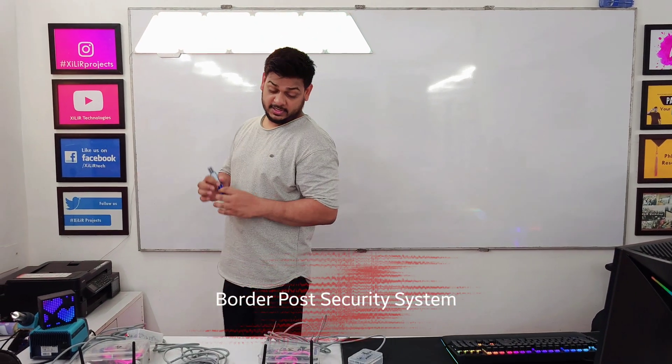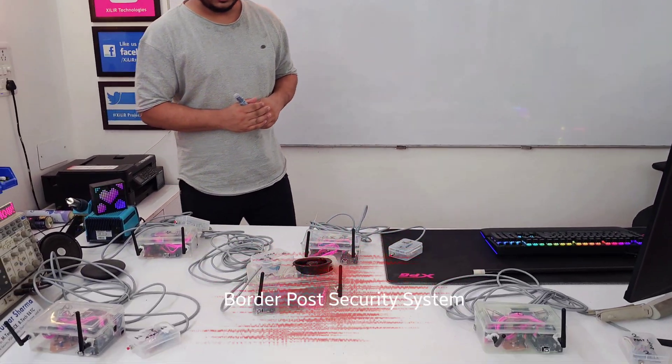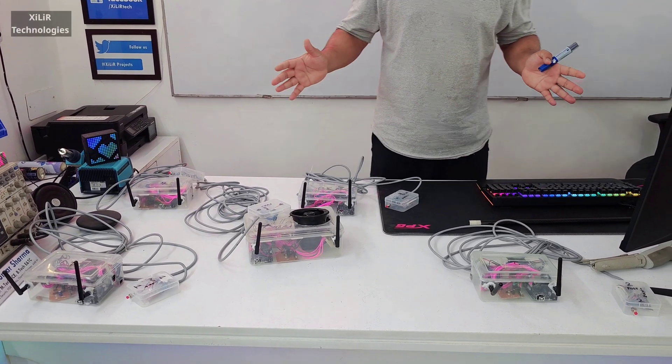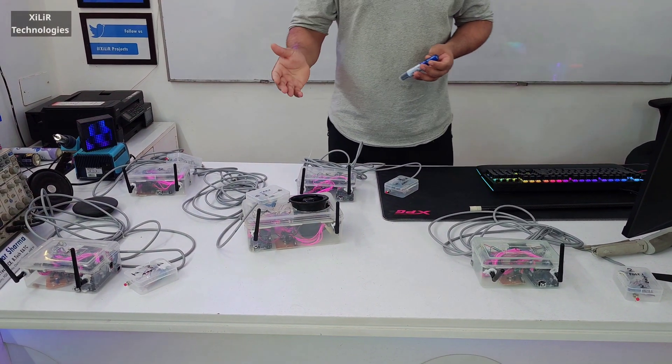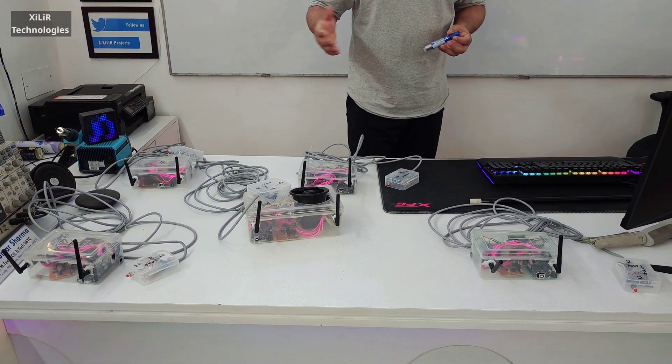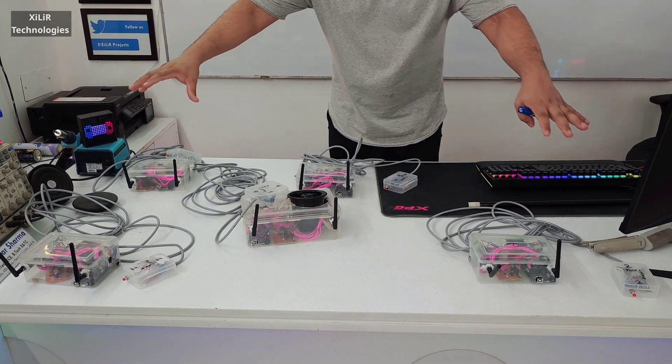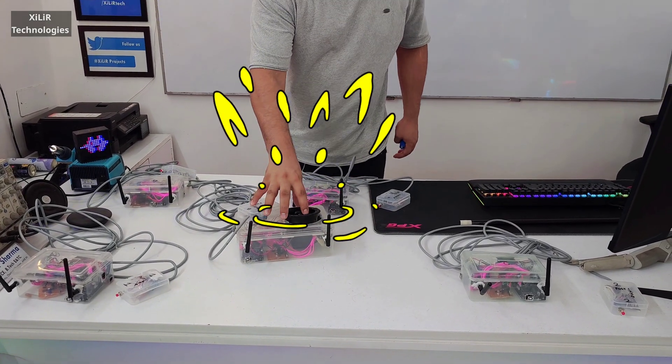Hello everyone, I am Rupin Sharma from Zara Technologies. Today I am going to demonstrate a project named Border Security. In this project we are using a wireless device, the NRF, which has a range of 1.2 kilometers. What we are doing here is sending signals from the substations to the main station.